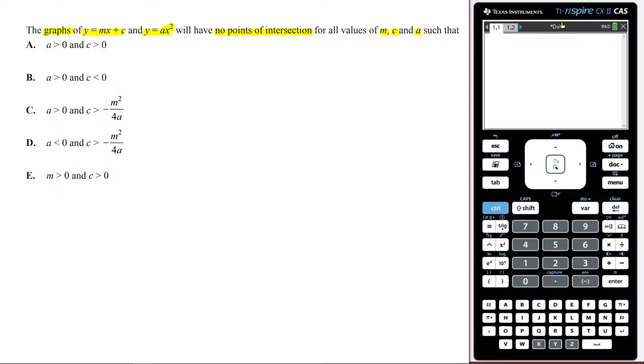Okay, so we're talking about points of intersection, so that means we're going to set both of these equal to each other. mx plus c equals ax squared. Now the fact that we have no points of intersection means that the discriminant is going to be less than zero.